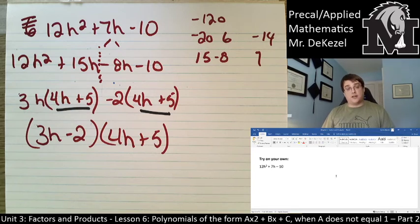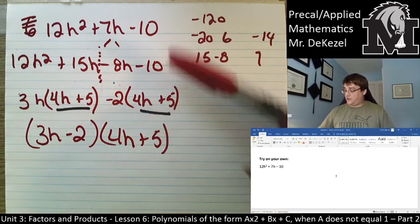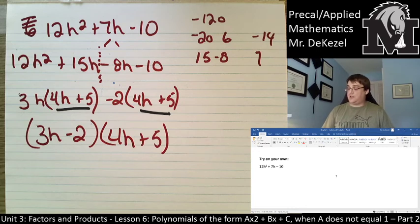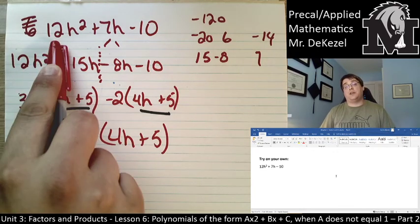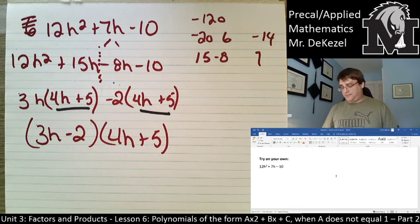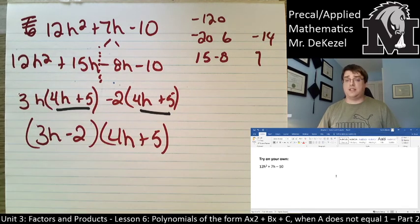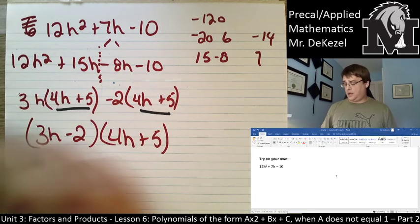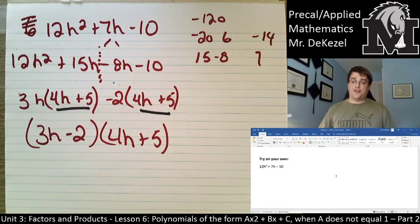That is your answer. How do you factor 12h squared plus 7h minus 10? It is more reliable when we get higher and higher numbers here. Logical reasoning is really good when you have a prime number. But, something like 12 is a very large number. So, decomposition is often the way to go when A is a larger number.